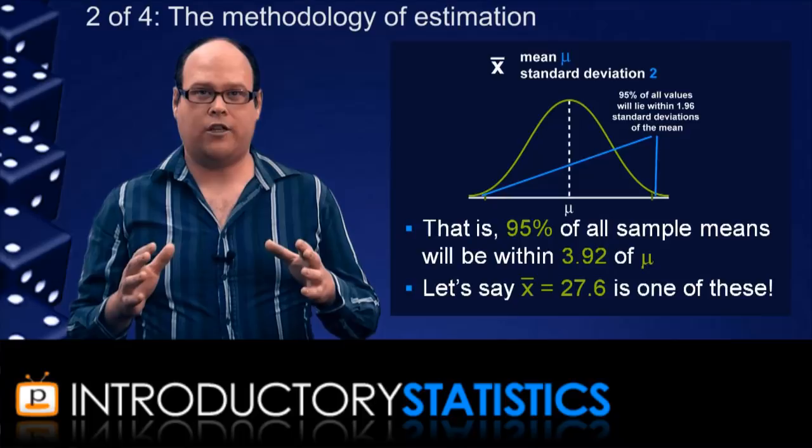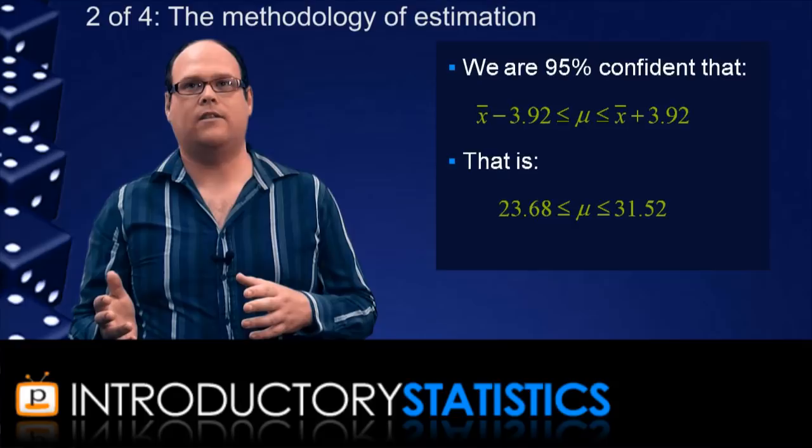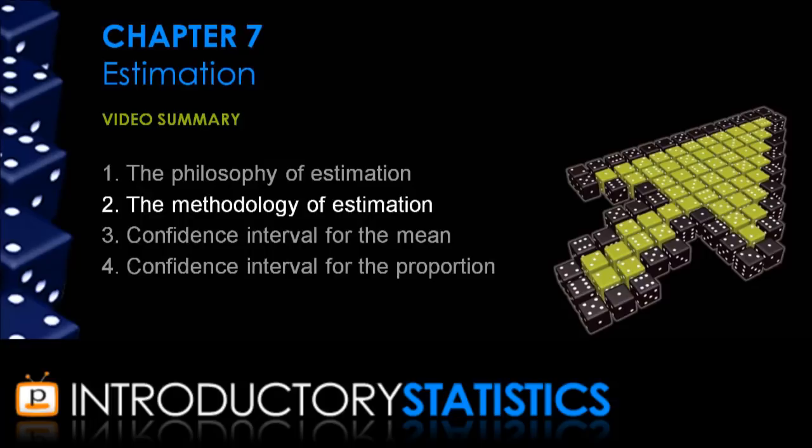So we think that the true population mean mu is within plus or minus 3.92 of our collected sample mean of 27.6. So the confidence interval is 23.68 up to 31.52 hours, and this is our 95% confidence interval.